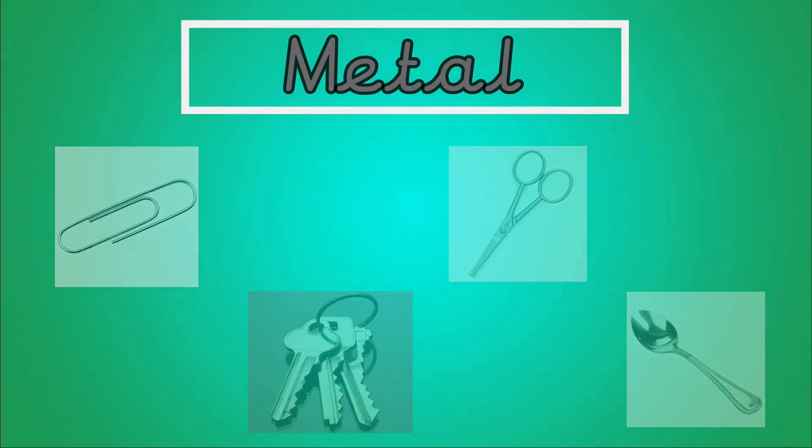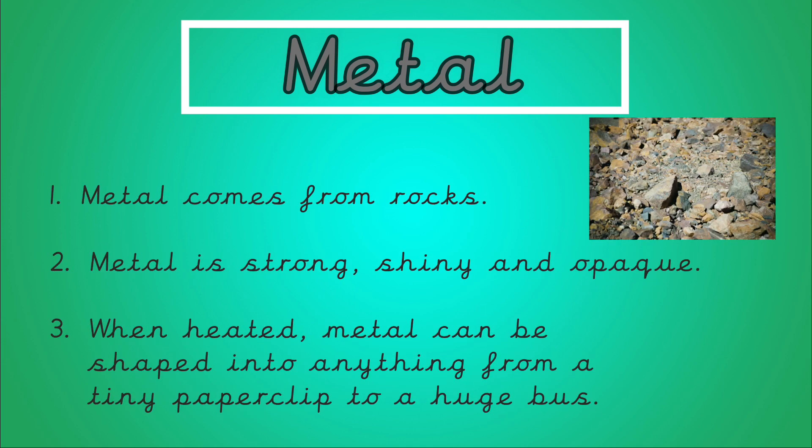Next we're going to have a look at some of the properties of metal. Metal comes from rocks. Metal is strong, shiny and opaque. Have a look at the piece that you found. Is it shiny? When heated metal can be shaped into anything from a tiny paper clip to a huge bus.